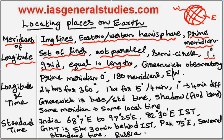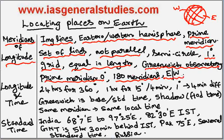The Prime Meridian is the line passing through the Greenwich Observatory near London City, and it is known as the Prime Meridian. Its position is 0 degrees. There are 180 Meridians on the Earth towards the East and the West.